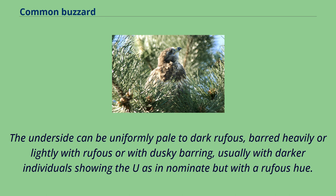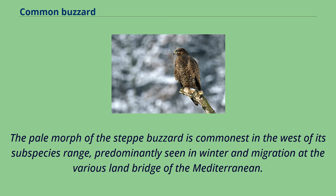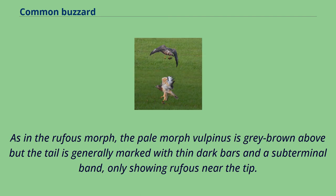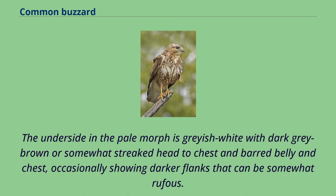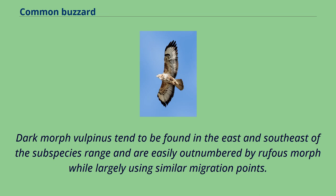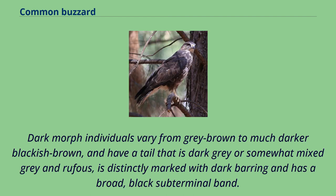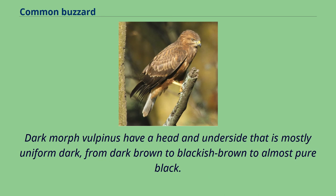The pale morph of the steppe buzzard is commonest in the west of its subspecies range, predominantly seen in winter and migration at the various land bridges of the Mediterranean. The pale morph vulpinus is gray-brown above but the tail is generally marked with thin dark bars and a subterminal band, only showing rufous near the tip. The underside in the pale morph is grayish-white with dark gray-brown or somewhat streaked head to chest and barred belly and chest, occasionally showing darker flanks. Dark morph vulpinus tend to be found in the east and southeast of the subspecies range, varying from gray-brown to much darker blackish-brown, with a tail that is dark gray, distinctly marked with dark barring and a broad black subterminal band. Dark morph vulpinus have a head and underside that is mostly uniform dark, from dark brown to blackish-brown to almost pure black.